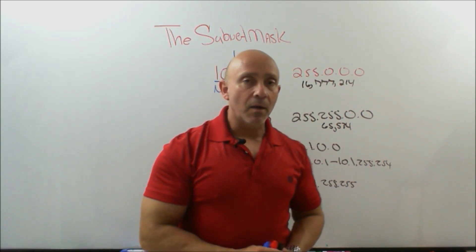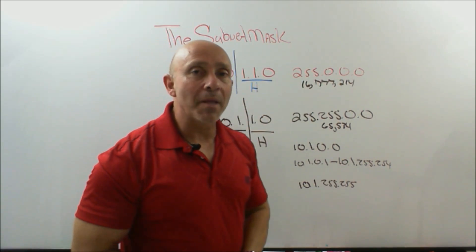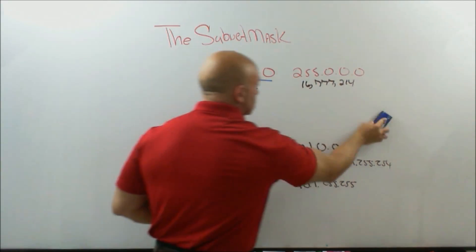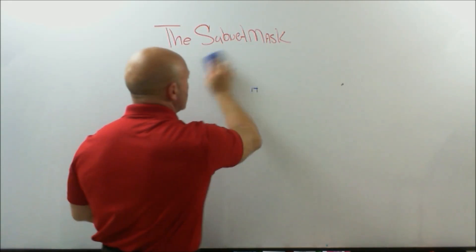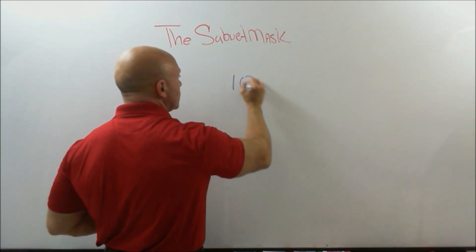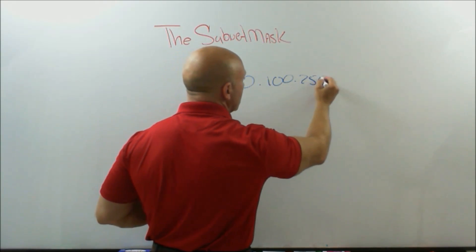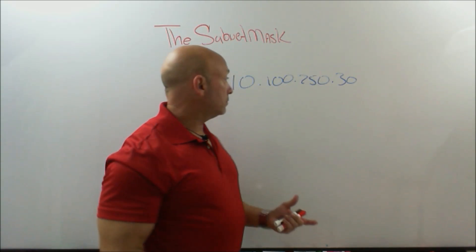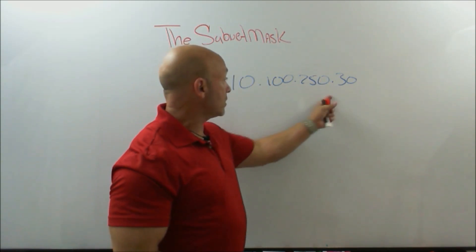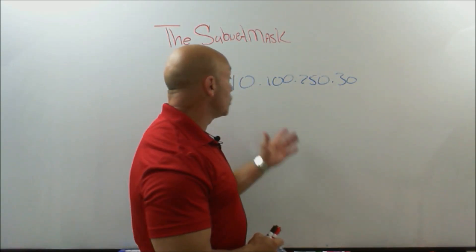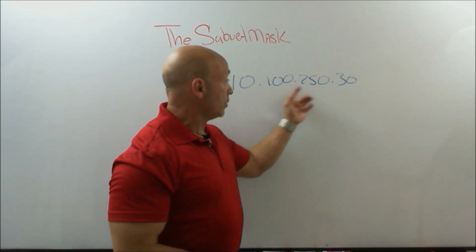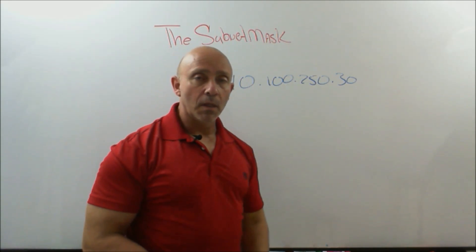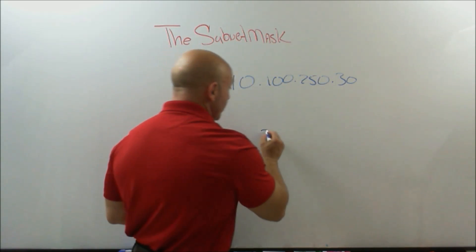Just to understand how important the subnet mask is — without it there's nothing. If someone asks you: 'I have address 10.100.250.30, what network does that belong to?' — without a mask I don't know. Using the default mask, it belongs to the 10.0.0.0 network. But without the mask you don't know what part is the network and what part is the host. The mask is extremely important.